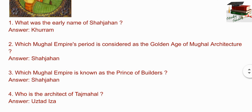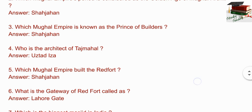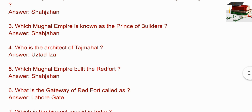Next question: which Mughal emperor's period is considered as the golden age of Mughal achievement? The right answer is Shah Jahan. Next question: which Mughal emperor is known as the Prince of Builders? The right answer is Shah Jahan. Next question: who is the architect of the Taj Mahal? The right answer is Ustad Ahmad Lahauri.